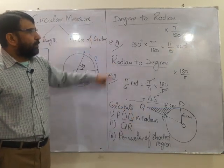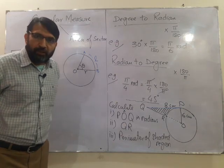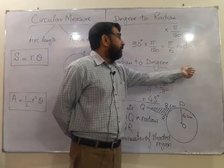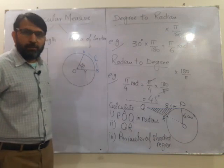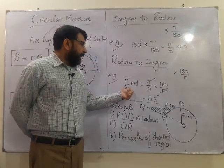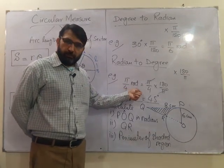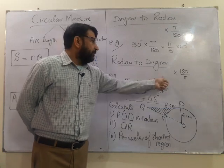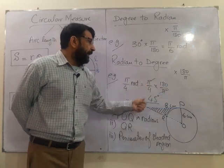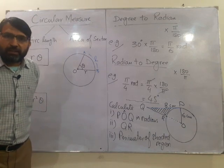Similarly if you want to convert radians to degree measure you will be multiplying by 180 over pi. For example if there is an angle pi by 4 radians given to you, pi over 4 multiplied by 180 over pi, pi's cancel and we are left with 45 degrees.